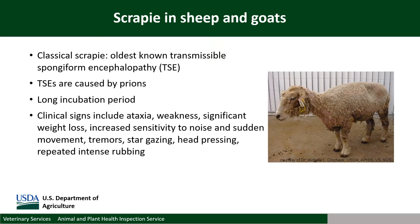Classical Scrapie is the oldest known transmissible spongiform encephalopathy, or TSE. It was first described in sheep in the United Kingdom in 1732. TSEs are caused by a unique infectious agent called a prion. Other TSEs include bovine spongiform encephalopathy, BSE or mad cow disease in cattle, chronic wasting disease or CWD in deer and elk, and Creutzfeldt-Jakob disease in humans. While BSE appears to be a zoonosis capable of transmission from animals to humans, there is no evidence that either Scrapie or CWD are transmissible to humans.